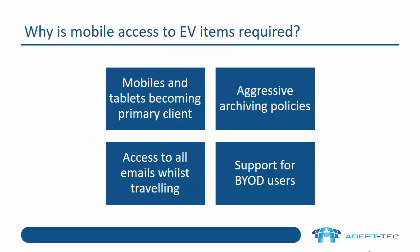Before we get into the details, let's consider why mobile access to EV items is required. One of the main reasons is that mobiles and tablets are becoming the primary email client for many users. Also, aggressive archiving policies caused by quota-based archiving mean that younger and younger emails are being archived.